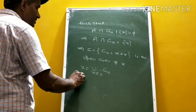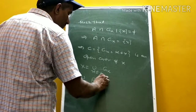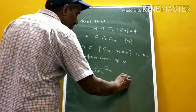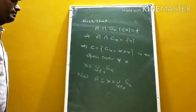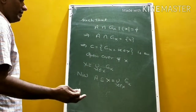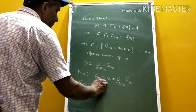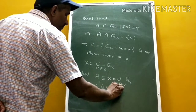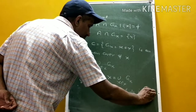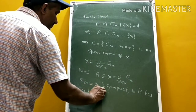Now, A is an infinite subset of X. Since X = ∪_{x ∈ X} G_x and X is compact, it has a finite sub-cover. That is, X = ∪_{i ∈ N} G_{x_i}.